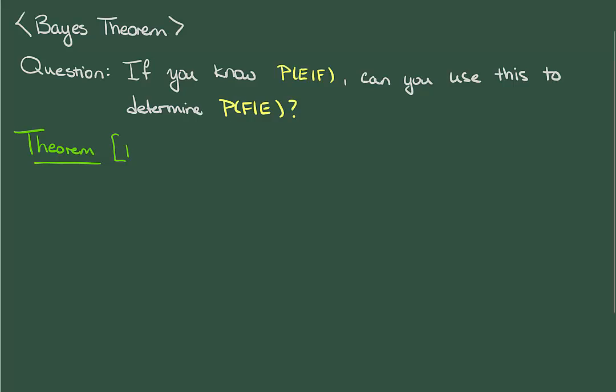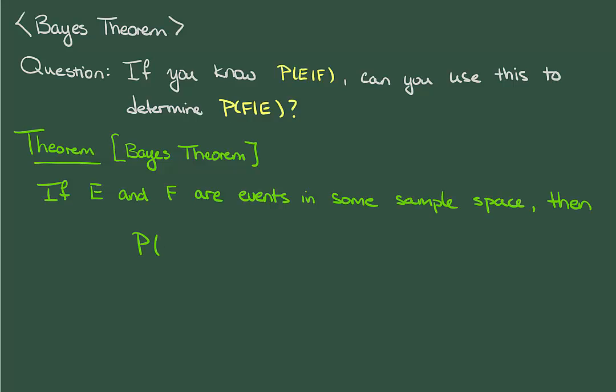The theorem which gives us our desired result is called Bayes' theorem. It says that if E and F are events, then we can compute the probability of F given E in terms of E given F as follows.